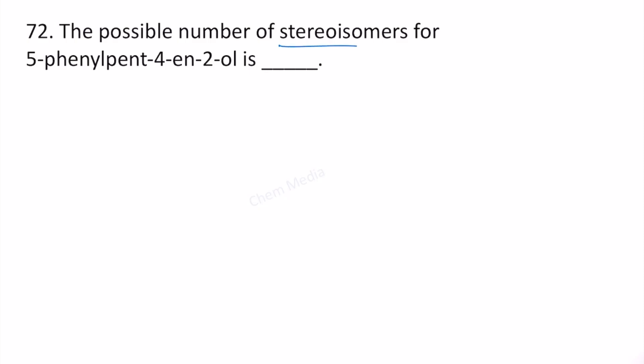The possible number of stereoisomers for 5-phenyl pent-4-en-2-ol is how many? Let us first draw the structure of this molecule.